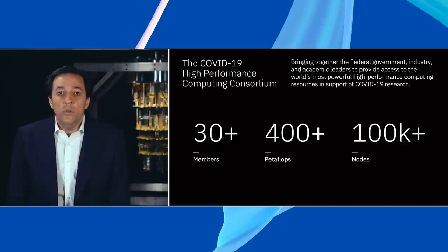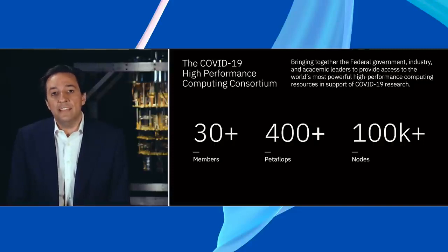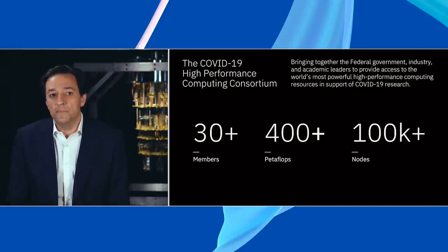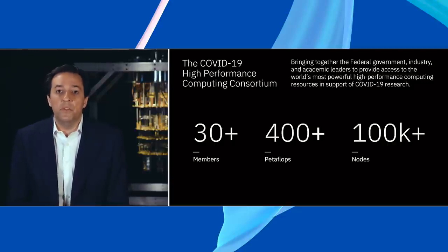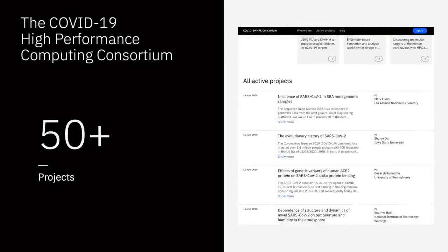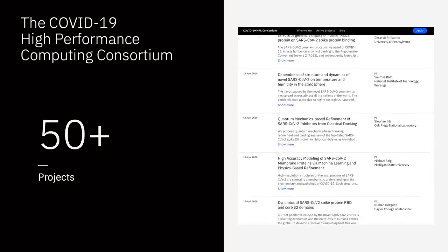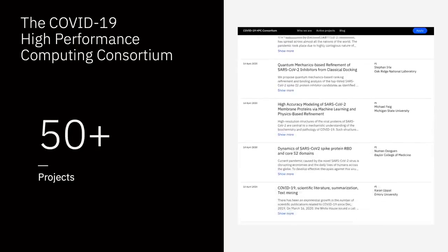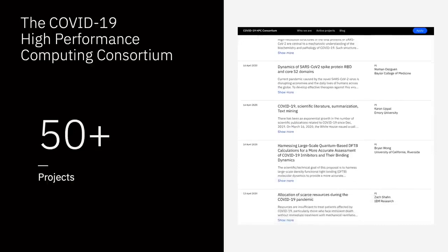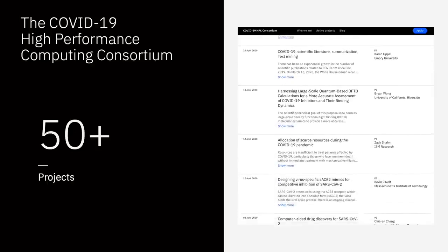That's why we were very proud to coalesce and create in partnership with the federal government and other institutions in the tech sector, as well as academia, the COVID-19 High Performance Computing Consortium, where 30-plus members have aggregated over 400 petaflops of computing power and over 100,000 nodes, to pursue a broad portfolio of projects that can help us understand the pandemic, understand the evolution of the virus, and accelerate the pace at which we can develop antivirals and ultimately vaccines.